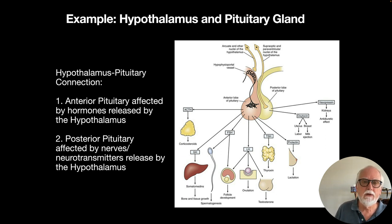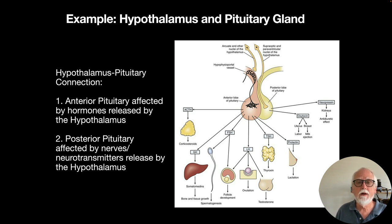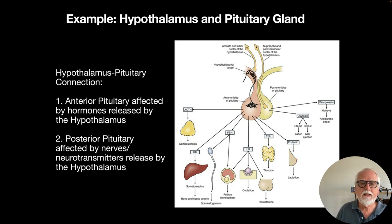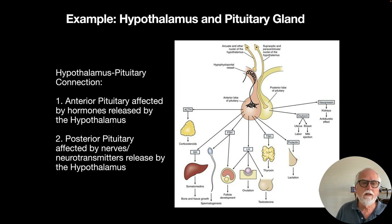In the hypothalamus-pituitary connection, the pituitary gland can be broken down into two parts: the anterior (front) lobe and the posterior (back) lobe. The anterior pituitary is affected by hormones released by the hypothalamus — cells in the anterior pituitary have receptors waiting for certain hypothalamic hormones to bind and cause changes. The posterior pituitary, on the other hand, is controlled by nerves and neurotransmitters released by the hypothalamus through direct nervous action.